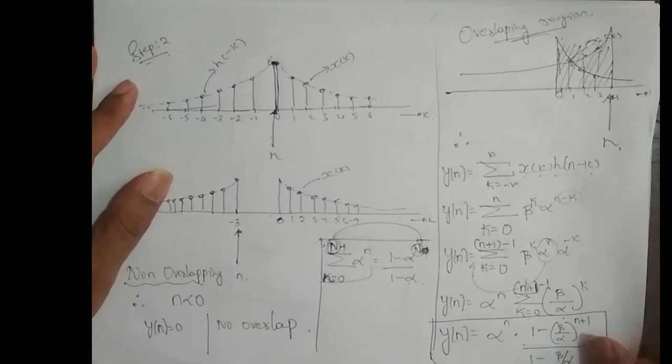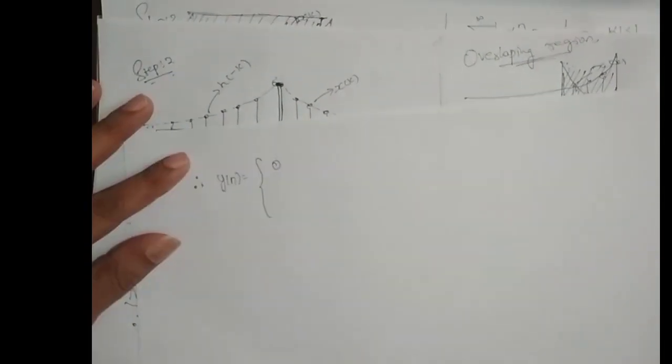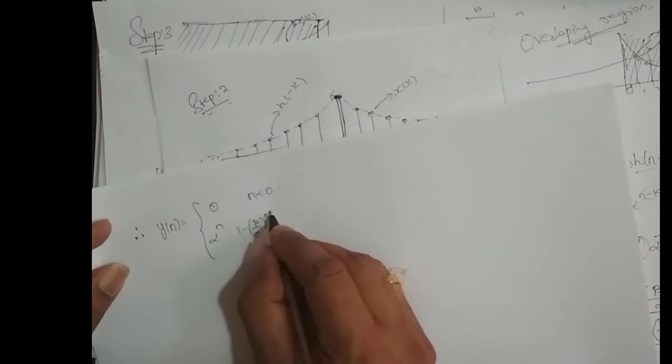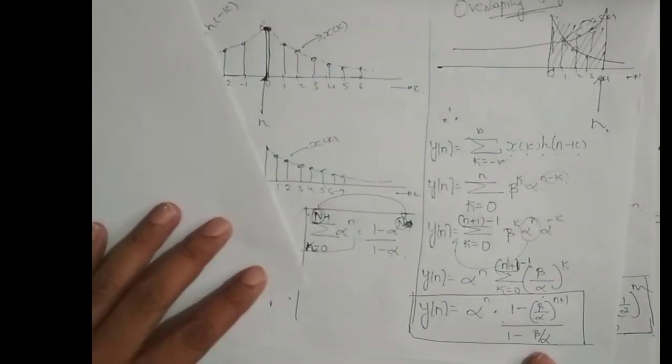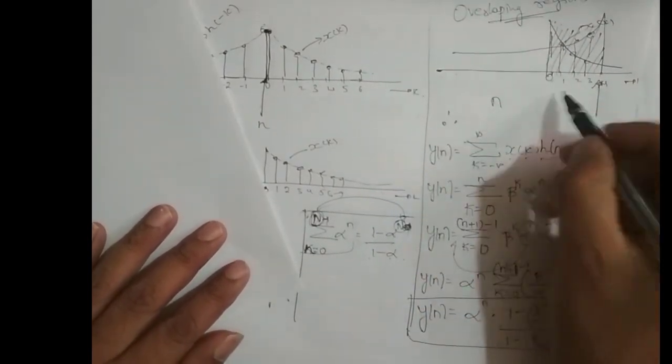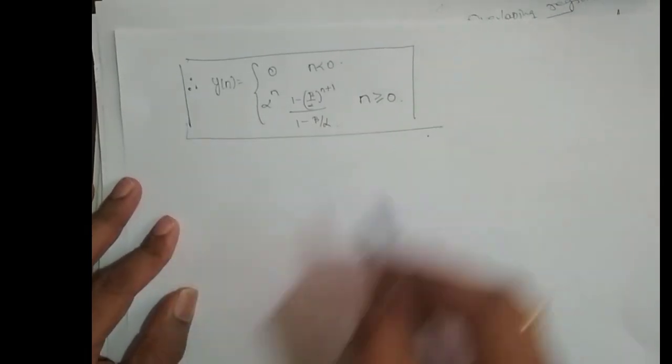Therefore, the output y[n] is a piecewise function: y[n] = 0 for n < 0, and y[n] = α^n · [1 − (β/α)^(n+1)] / (1 − β/α) for n ≥ 0. This is the complete output of the LTI system for this convolution problem.